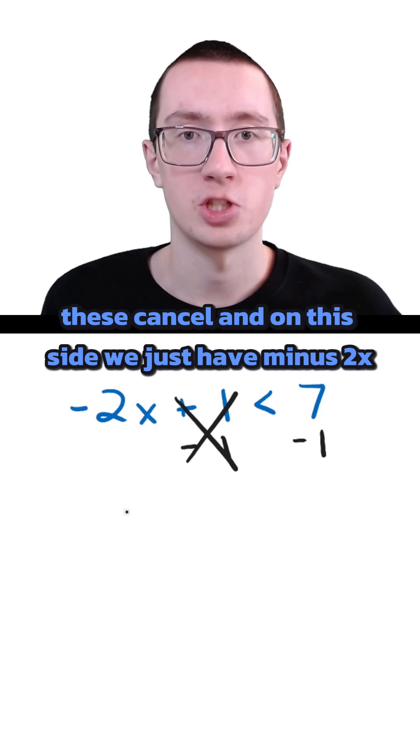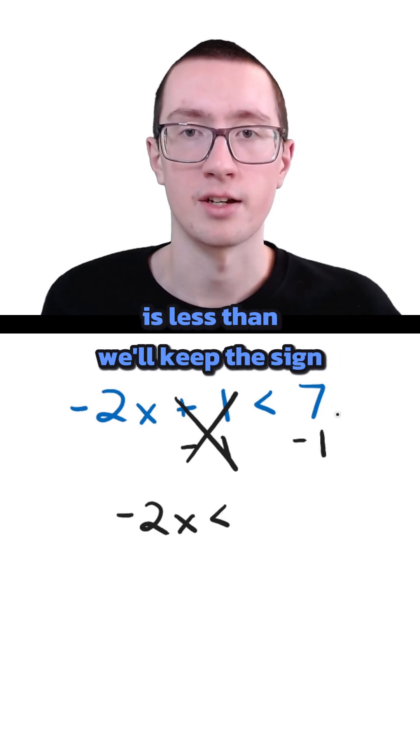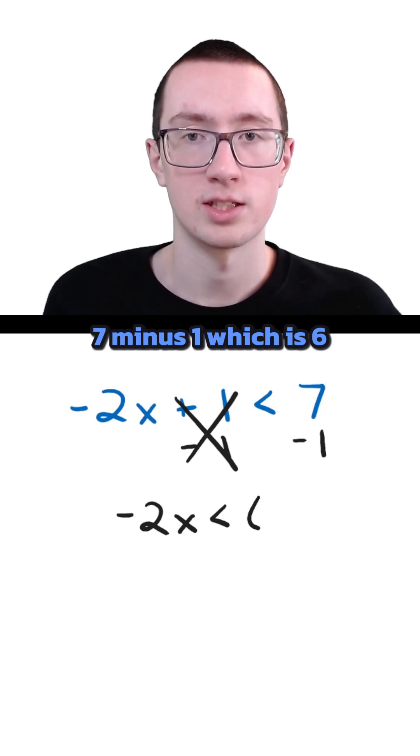These cancel, and on this side we just have negative 2x is less than, we'll keep the sign, 7 minus 1, which is 6.